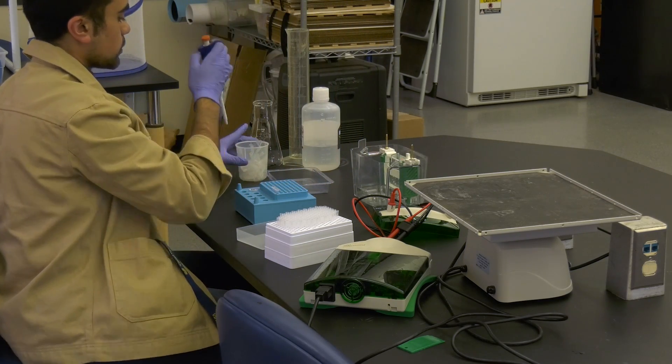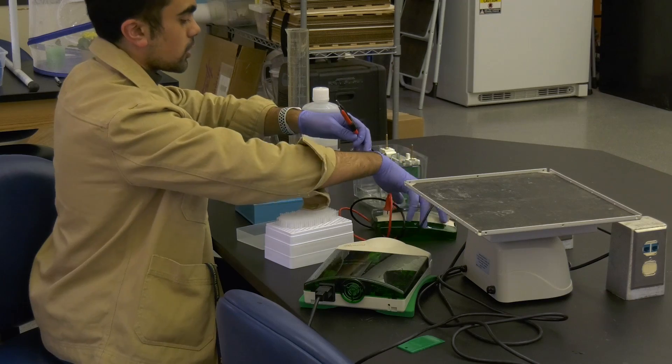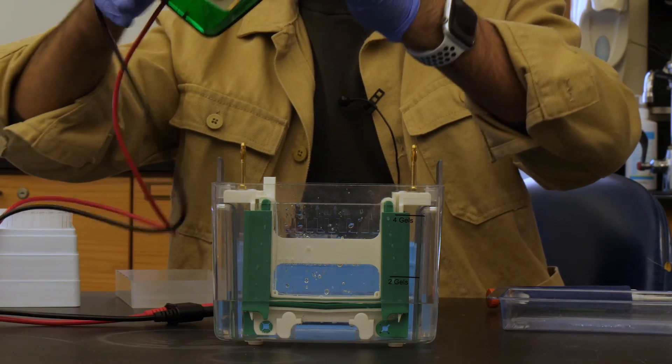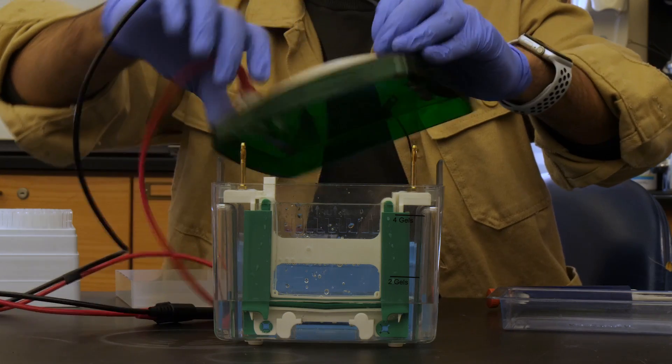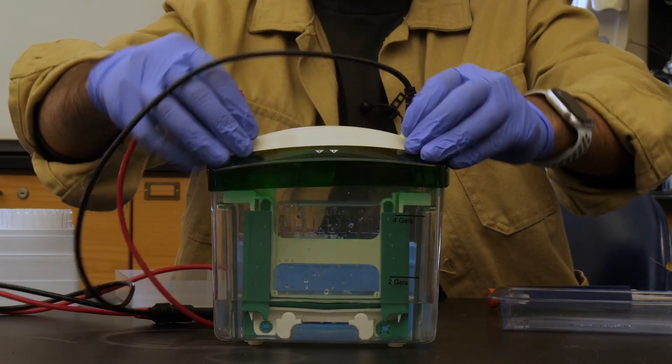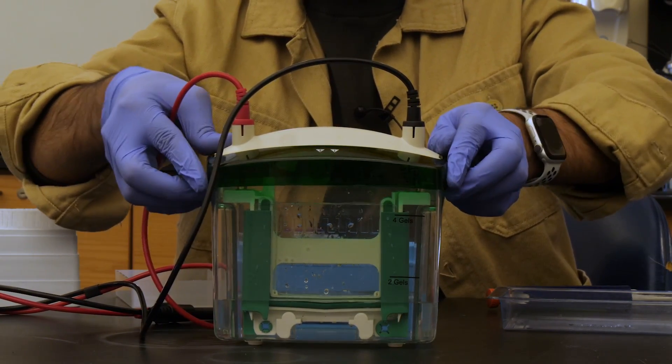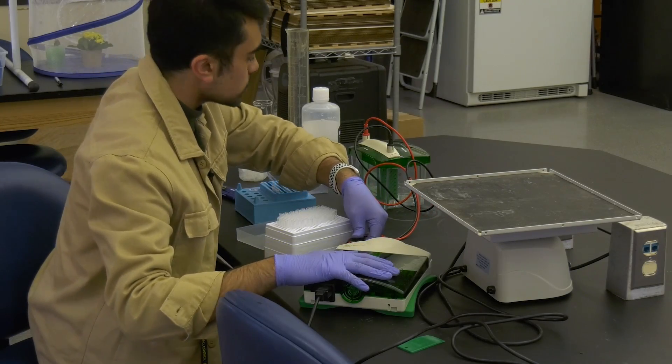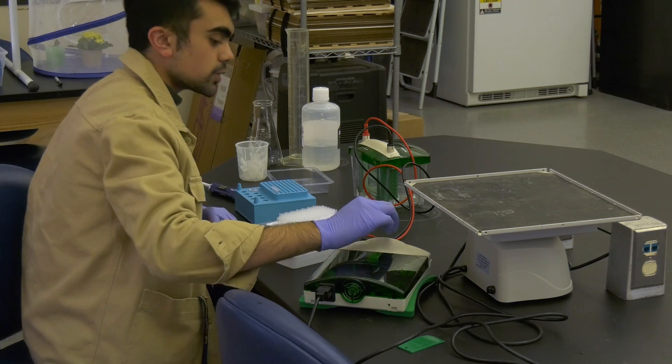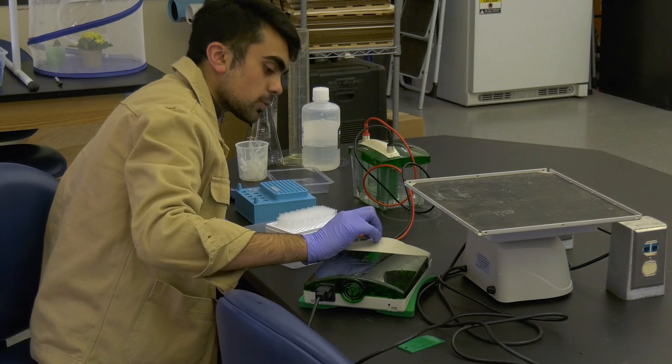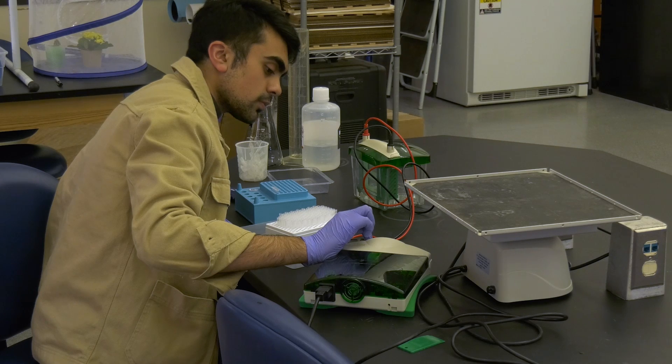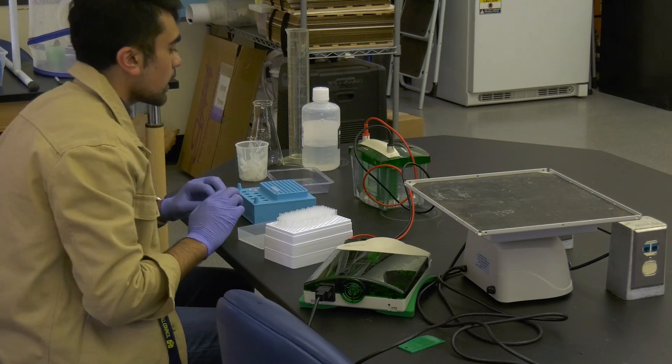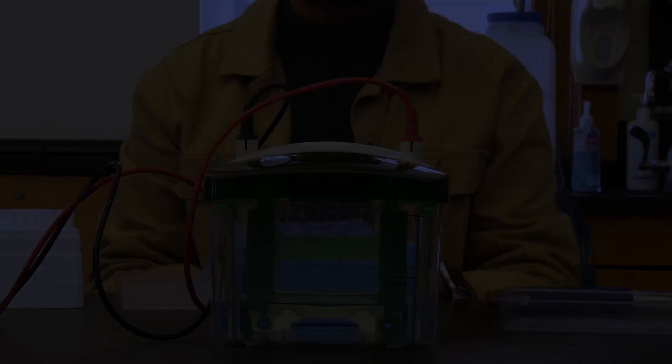Now that you have loaded your gel, you are now ready to start running it. We'll make sure our electrodes are facing the correct way. You'll want to plug in your gel box into your power source, set it at the appropriate voltage depending on how fast you want to run it, and make sure you see your bubbles coming up from the bottom.